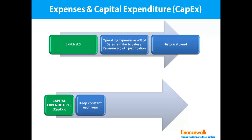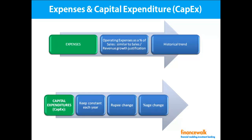For capital expenditure forecasting, the next fiscal year estimate is usually supplied by management in the MD&A — Management Discussion and Analysis — which gives very useful information. Beyond that, capex can be estimated by keeping it constant each year based on historical capex if relevant, or as a percentage change based on historical capex, or as an average of the last three years. Usually capex grows each year, so for a normal trend this projects a decline in percentage terms.